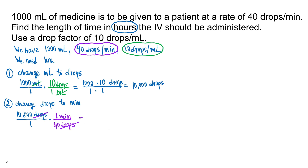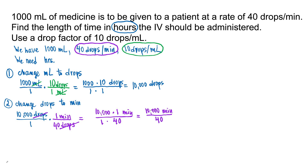Let's multiply our fractions. We multiply the numbers in the numerator: 10,000 times 1 minute over 1 times 40. Here we are actually going to divide by 40. We have 10,000 minutes divided by 40. Divide 10,000 by 40 and you will get 250 minutes.